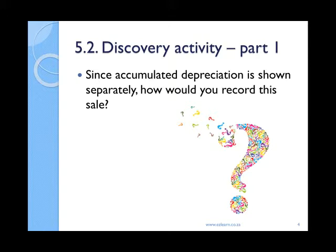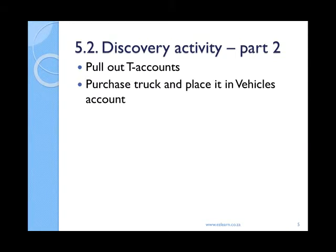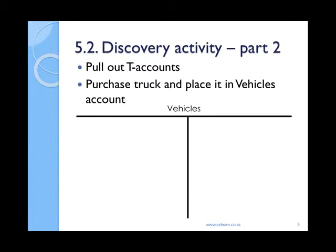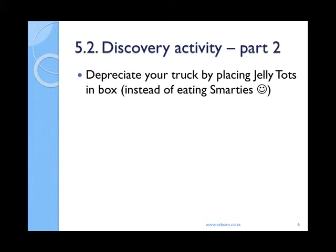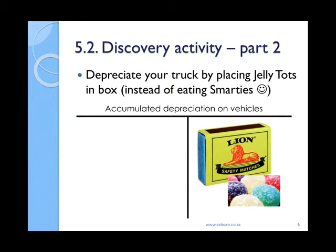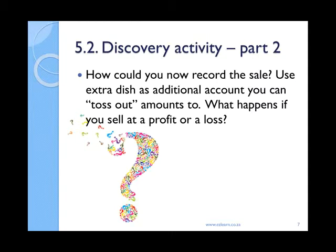In order to figure this out, we're going to try this exercise again — part two. Pull out the T-accounts in your book and lay them out on your desk flat. This time when you buy your truck loaded with five smarties again and pay your five jelly tots, instead of just leaving it on your table, drive it onto your vehicles T-account. Now when you depreciate your truck, instead of eating the smarties, take jelly tots and use these instead — place them in the matchbox. You should realize that you would need to credit your accumulated depreciation on vehicles. Now when you sell your truck, use your extra dish as an additional T-account.